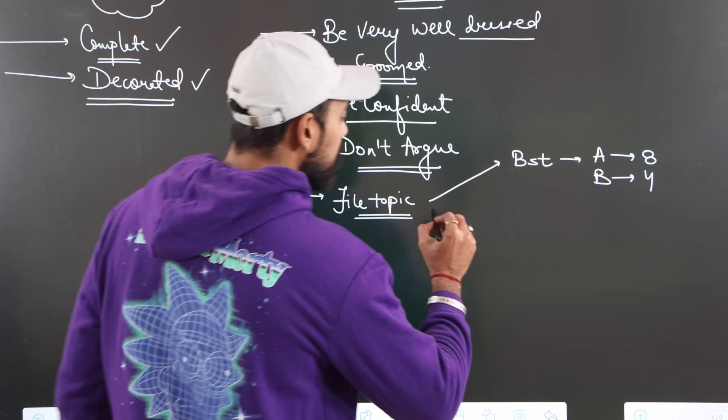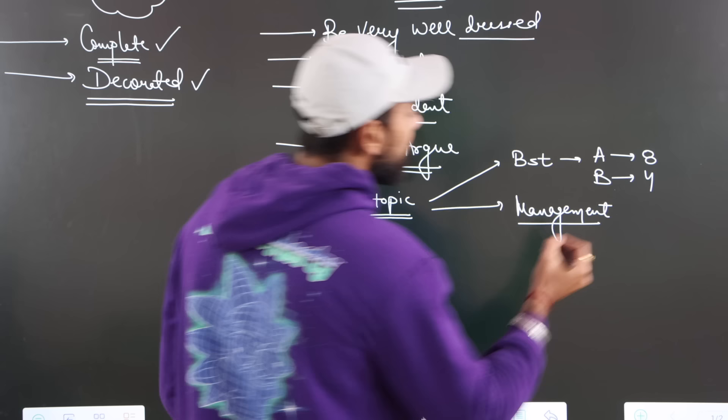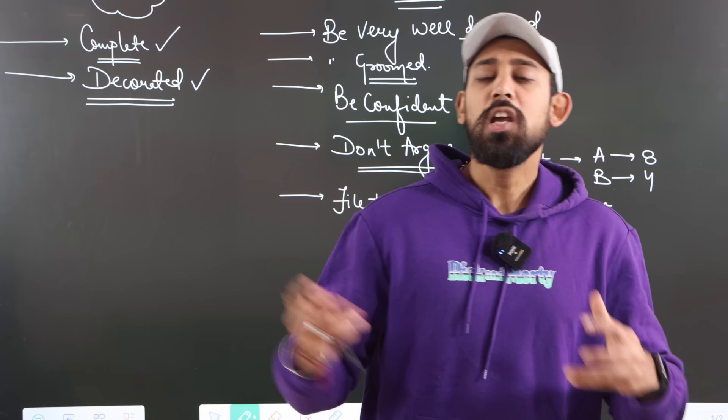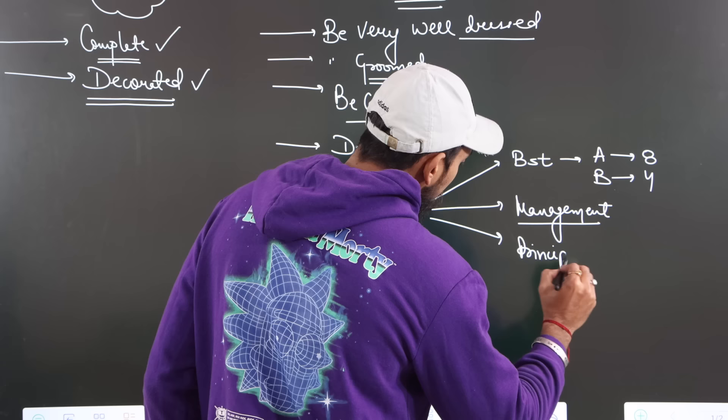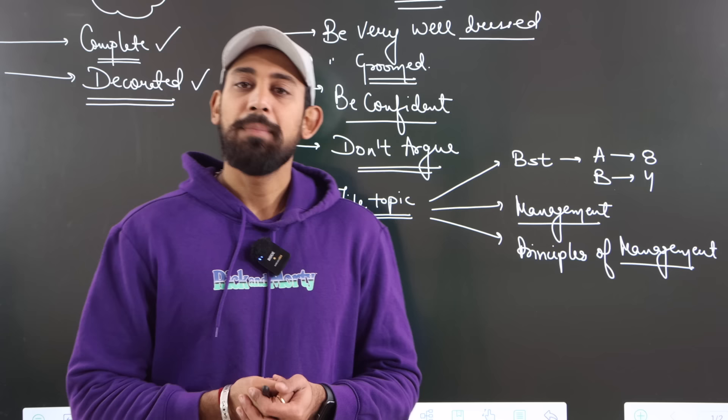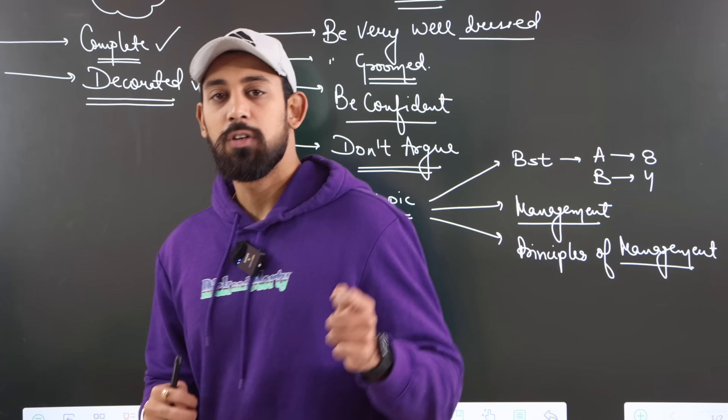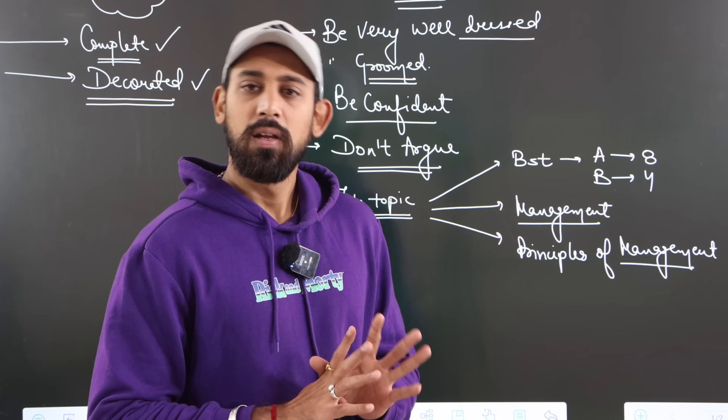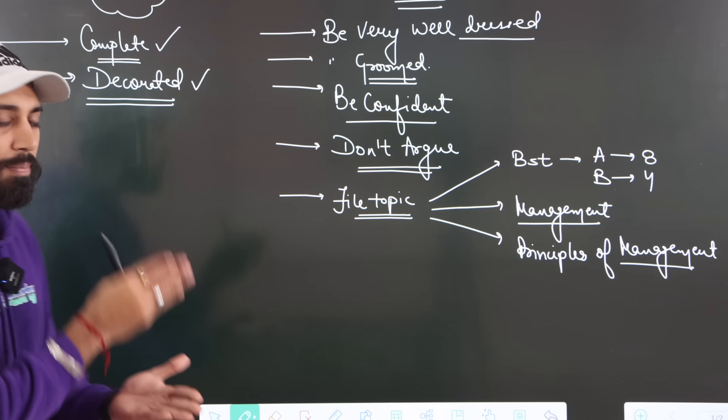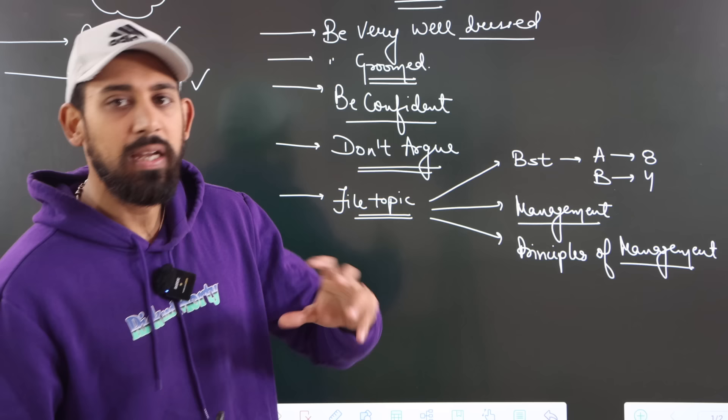After that, chapter number one is management. That question is very good. Specifically, effectiveness and efficiency. How many levels of management are there? Is management a science, art or profession? These are common questions that the teacher can ask you. In the first chapter, there is a question. So the first chapter should be very strong. In the second, principles of management, you should know who the father of general management and who the father of scientific management. Father of general management Henry Fayol and scientific management F.W. Taylor, Frederick Winslow Taylor.